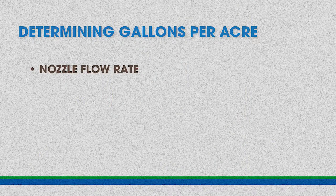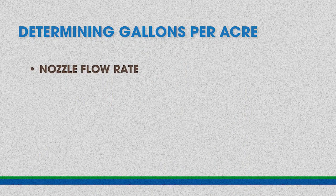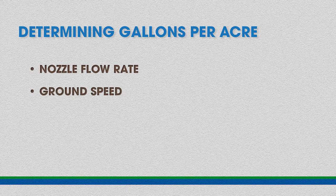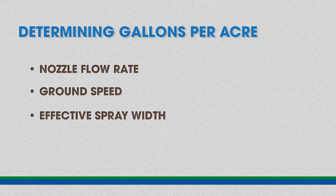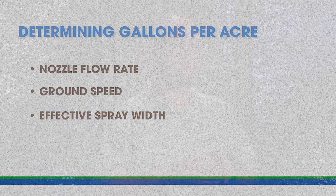There are three things that determine how many gallons per acre you apply. The first one is the nozzle flow rate measured in gallons per minute — so for one minute's time, how many gallons of spray come out of that nozzle. The second thing is the ground speed at which the sprayer will be operating, measured in miles per hour. The third thing is the effective sprayed width, which we measure on a per nozzle basis — essentially how wide an area does each nozzle have to cover.